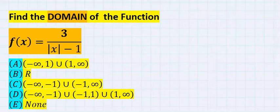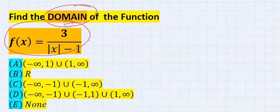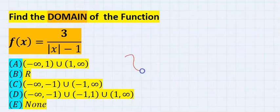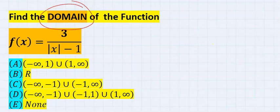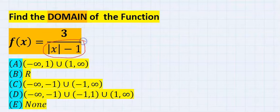By the end of this video you will be able to solve the domain of this function and then choose an answer from one of these options, among different types of domain and range questions seen in the exams. Domain simply means all possible allowable x values you can permit in your function. Considering the denominator, we have absolute value here.